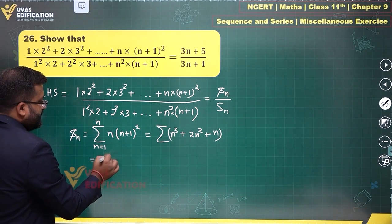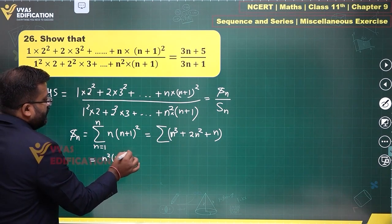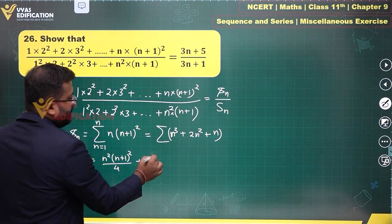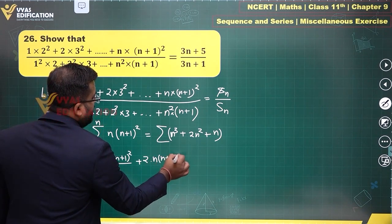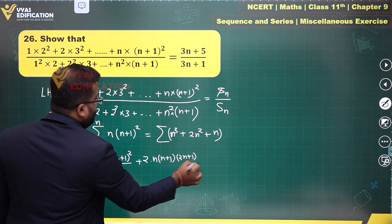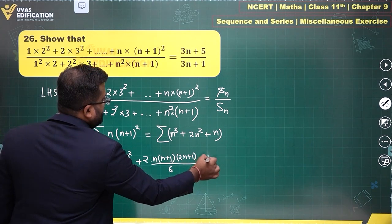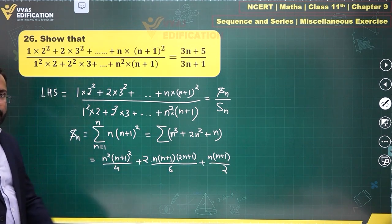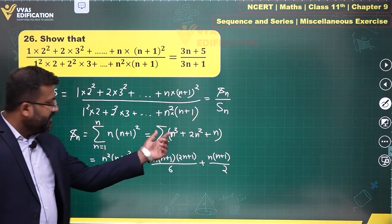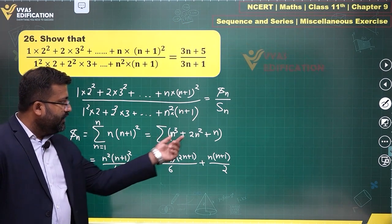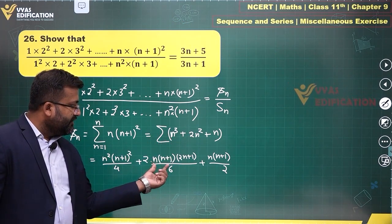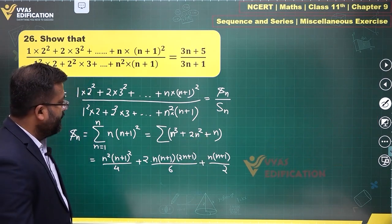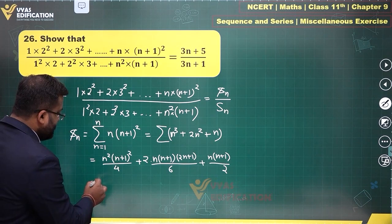This simplifies into: summation of n³ = n²(n+1)²/4, plus 2 times summation of n² = n(n+1)(2n+1)/6, plus summation of n = n(n+1)/2. Please observe this carefully. We can take out something common — yes, from the numerator take out n(n+1) common, and from the denominator take LCM as 12.